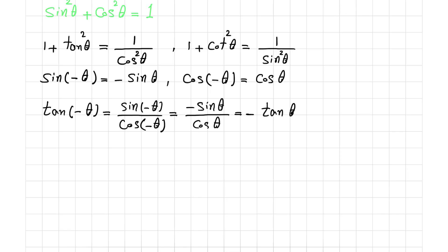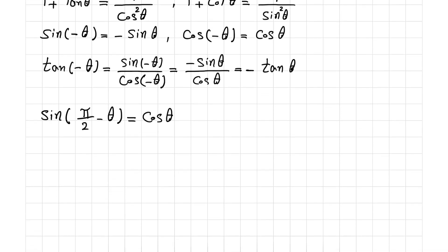Also we have sine of pi over 2 minus theta, and sine of pi over 2 minus theta equals cosine of theta. I can explain and illustrate this on the trigonometric circle — let me draw this circle again.